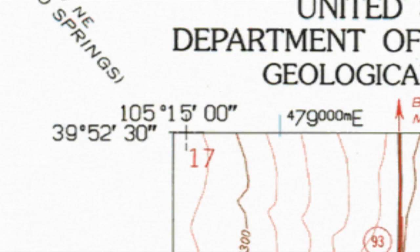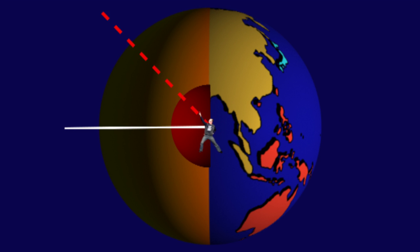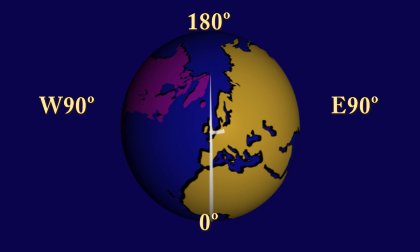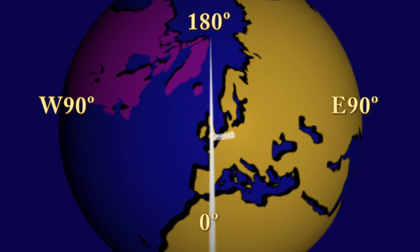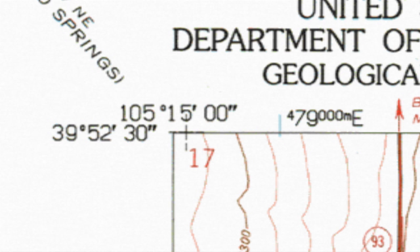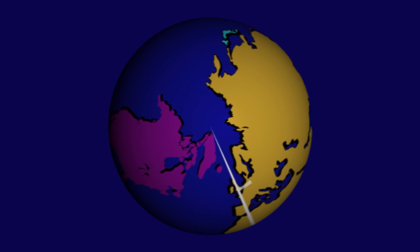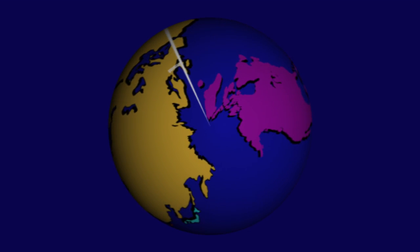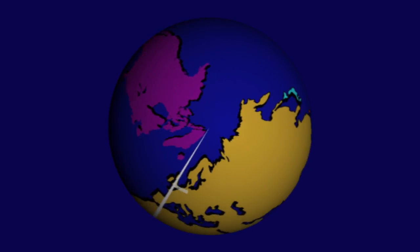Another way to know which is which: a latitude can never be over 90 degrees, but a longitude can reach up to 180 degrees. Our location is 39 degrees, 52 minutes, 30 seconds — they don't tell you whether it's north or south, but we assume you know you're north of the equator — and 105 degrees, 15 minutes, zero seconds west of the prime meridian. The USGS has it easy; every map under its purview is west of England, even Hawaii at near 160 degrees west longitude.